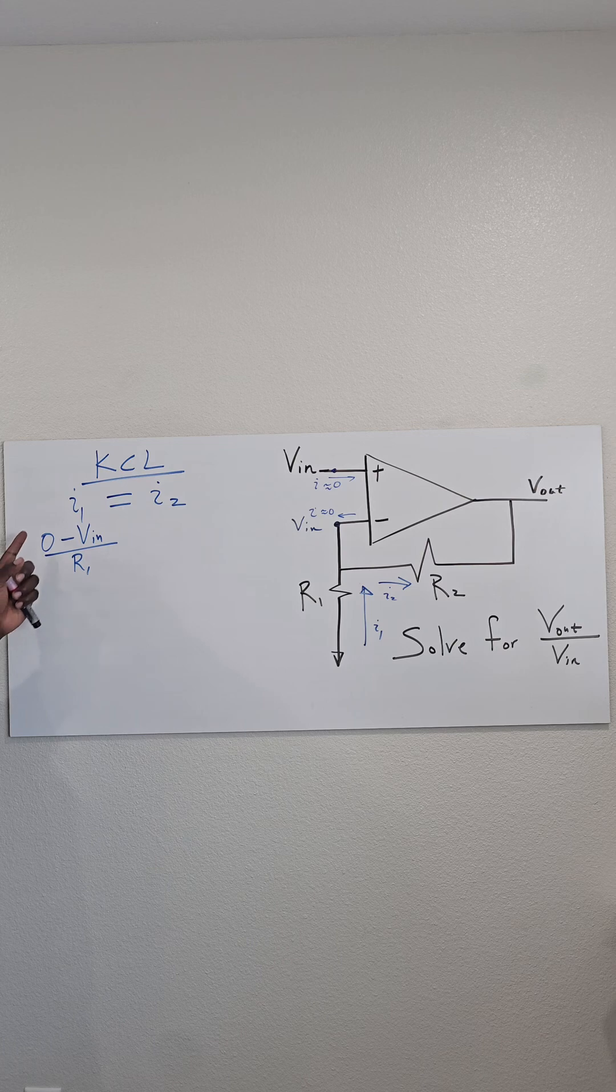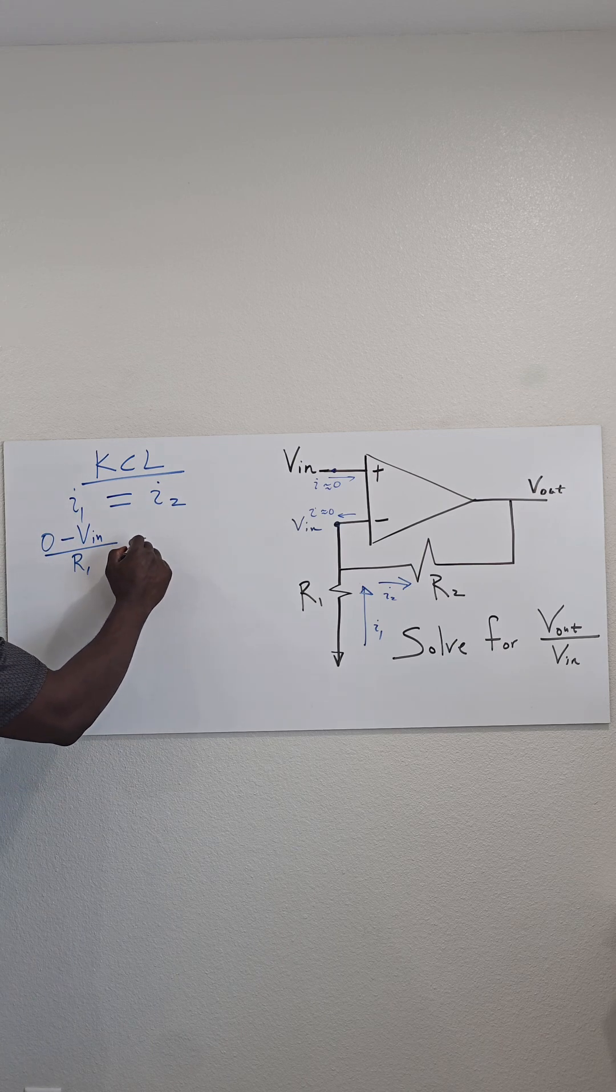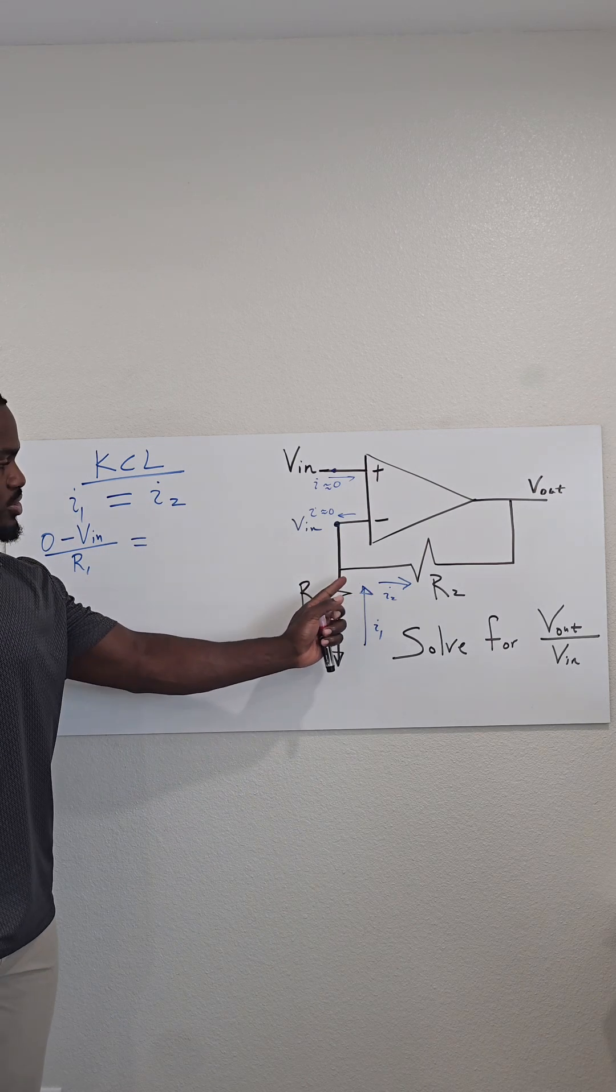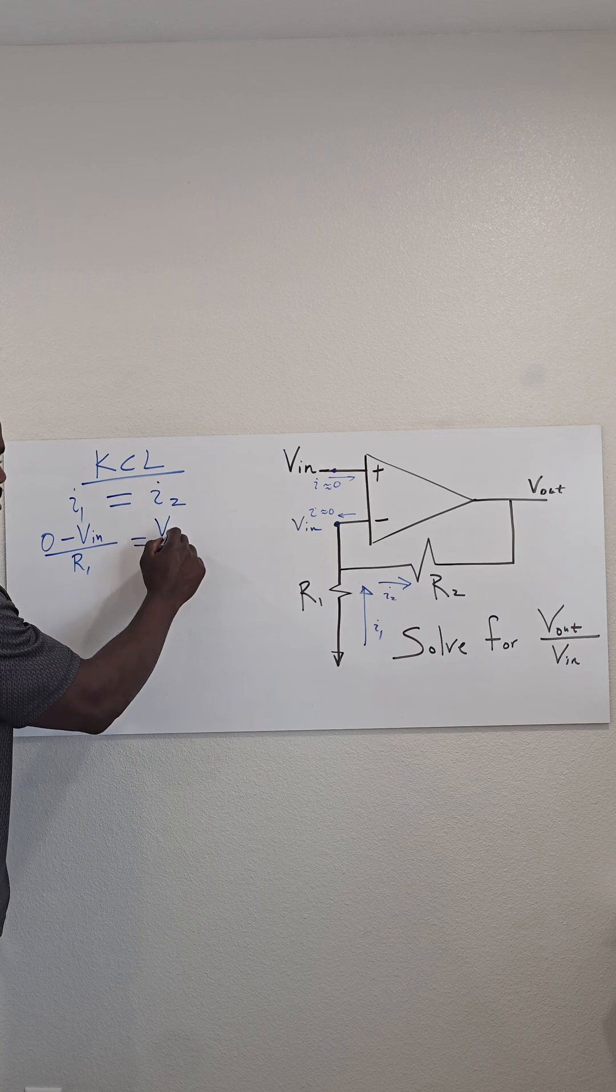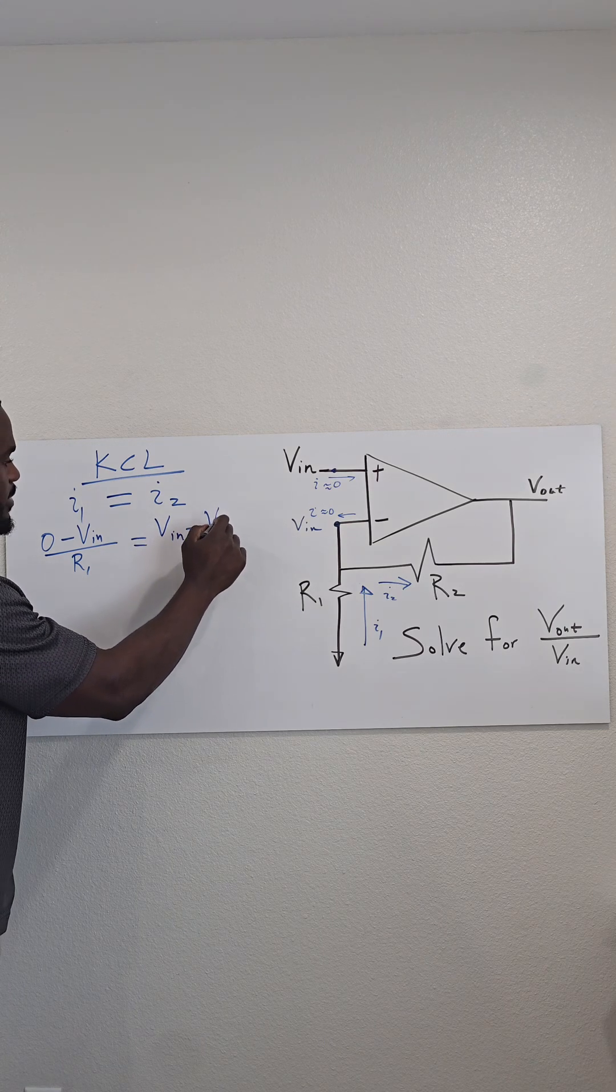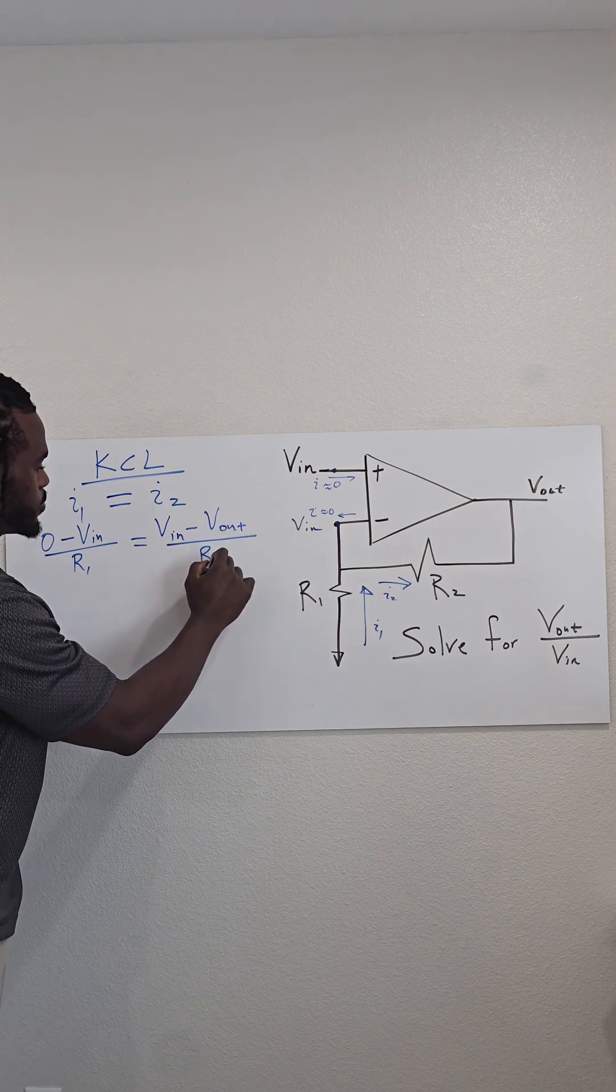Again, this is a current equation. Has to equal the current I2, which is Vin minus Vout over R2.